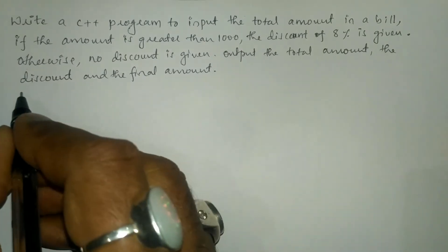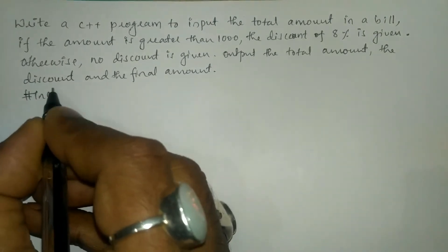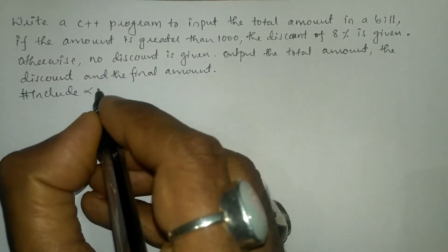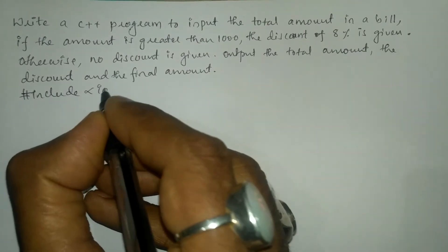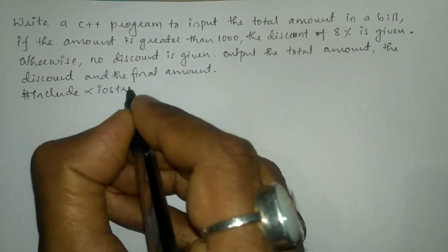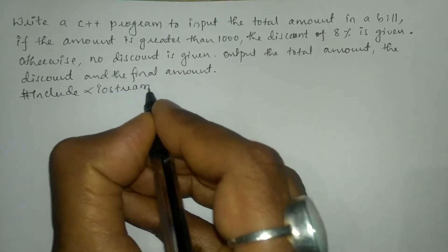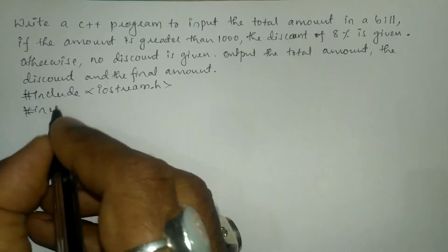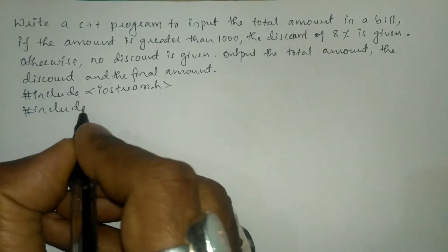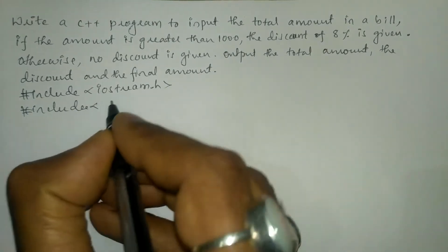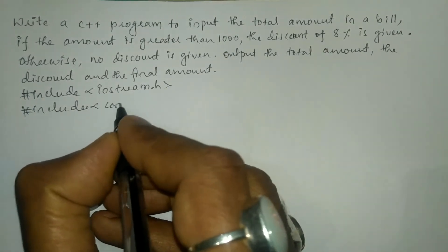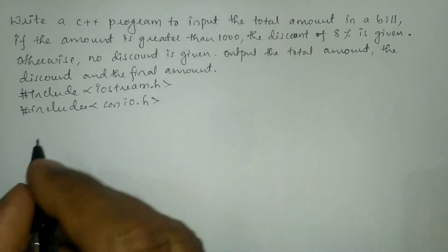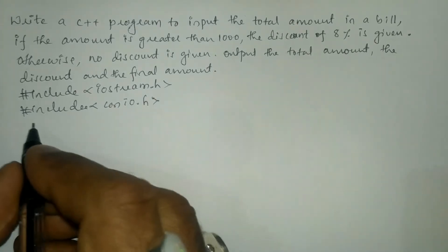Let us write the preprocessor directives: hash include in angular brackets, we'll write the iostream.h header file, and the next preprocessor directive hash include in angular brackets will be the conio.h header file.